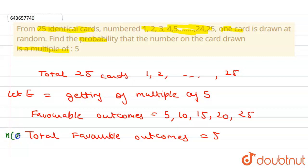Total number of favorable outcomes, and this is our number n(S), total number of sample space.